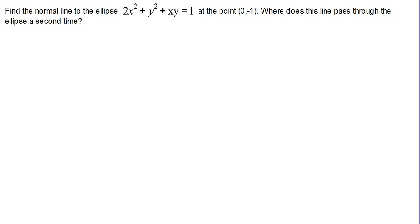In order to find the normal line to an ellipse given by the equation 2x squared plus y squared plus xy equals 1, the first thing we have to do is find the derivative of this equation, because the derivative will give us the tangent line slope, and we can take the opposite reciprocal to find the normal line.